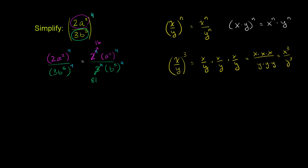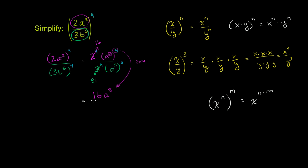To simplify the remaining terms, we use the power rule of exponents: x to the n raised to the mth power equals x to the n times m. So our numerator is 16 times a squared to the fourth, which is a to the 2 times 4 or a to the 8th power. In the denominator we have 81 times b to the fifth to the fourth, which is b to the 5 times 4 or b to the 20th power. The final answer is 16a to the 8th over 81b to the 20th.